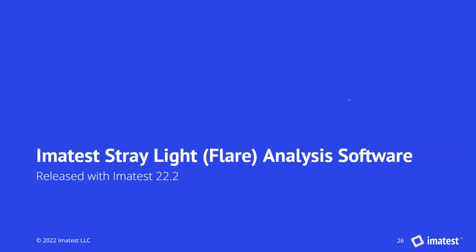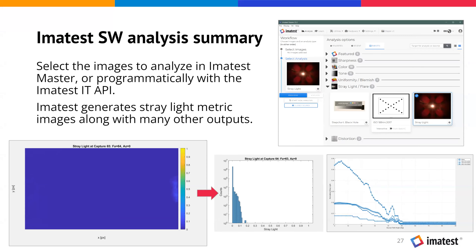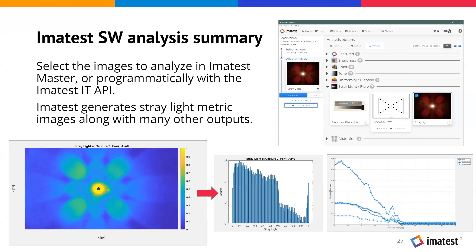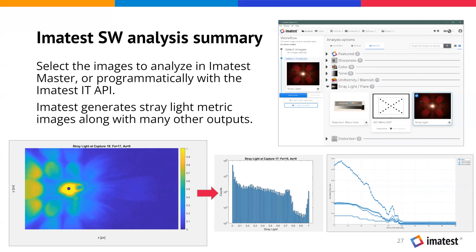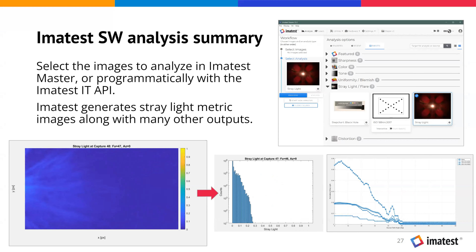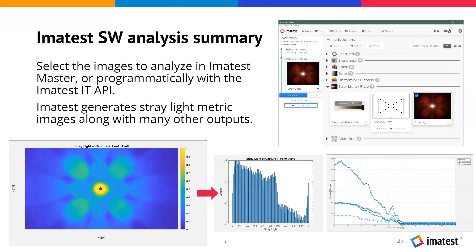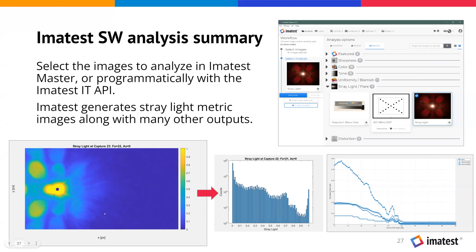Now let's talk about the MTS stray light analysis software. We released the stray light analysis feature in our most recent 22.2 release. The workflow is straightforward: you capture those images we talked about, then select them in MTS or using the MTS IT API, and that will generate the stray light metric image outputs along with supplementary outputs. The main output of the analysis is the metric images, and everything else — plots, histograms — is derived from those. You'll gain the most insight by looking at the metric images themselves.